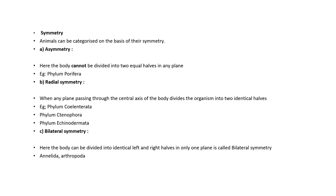For example, Phylum Porifera. Radial symmetry: along a central axis, two equal halves are symmetry. This is radial symmetry, seen in Phylum Cnidaria, Phylum Ctenophora, and Phylum Echinodermata.